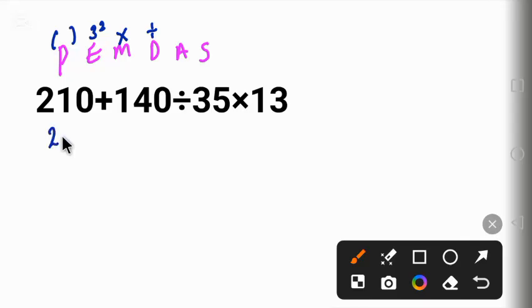And we have 210 plus 140 divided by 35 will give us plus 4 times 13. Then we work the multiplication. 210 plus 4 times 13 will give us 52.